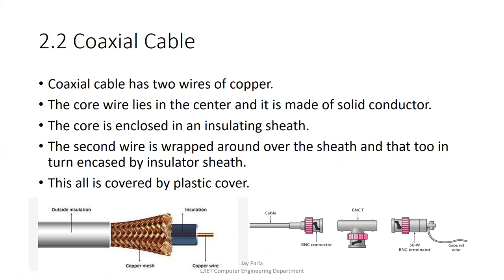The second type is coaxial cable, commonly found behind televisions. It has a central copper wire insulated by plastic, surrounded by a copper mesh and an outer insulation layer. Coaxial cable uses three types of connectors: the BNC connector, BNC T-connector, and BNC terminator.